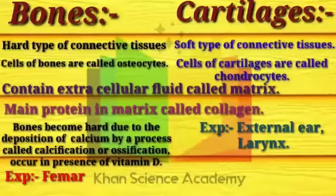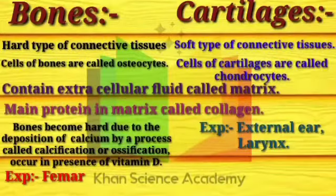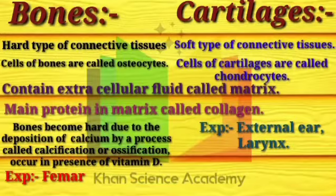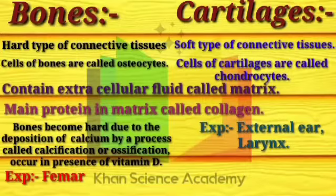Bones are hard tissue. Bones become hard due to the deposition of calcium via the process of calcification, also called ossification, which occurs in the presence of vitamin D. Vitamin D is necessary for bones to become hard. This process of calcification involves the deposition of calcium.